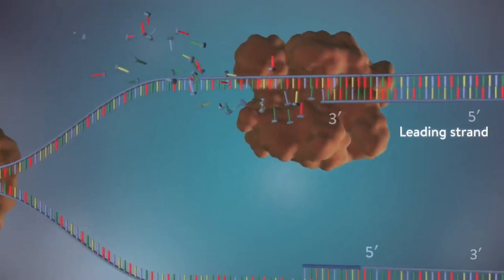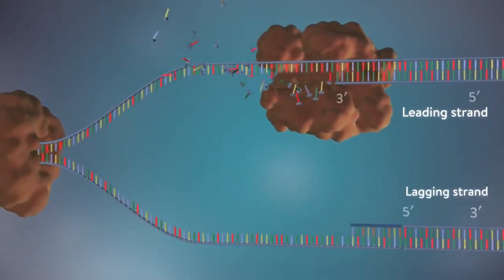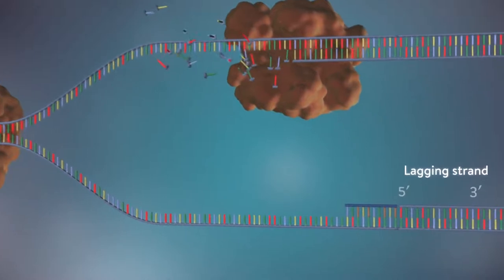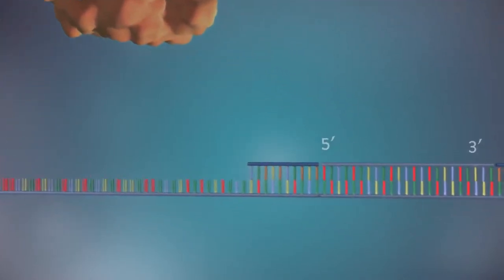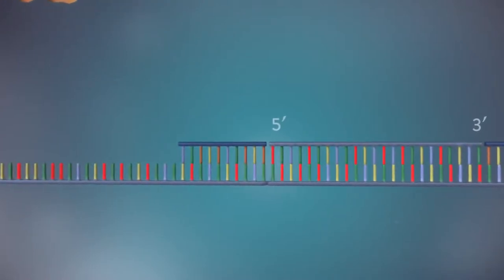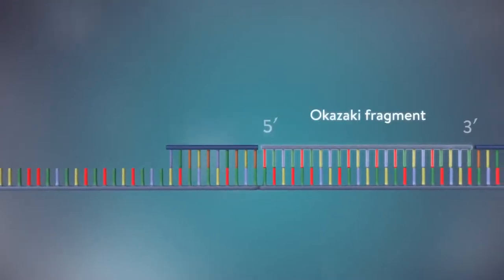The other strand, the lagging strand, cannot be made in this continuous way because it runs in the opposite direction. The DNA polymerase can therefore only make this strand in a series of small chunks called Okazaki fragments.